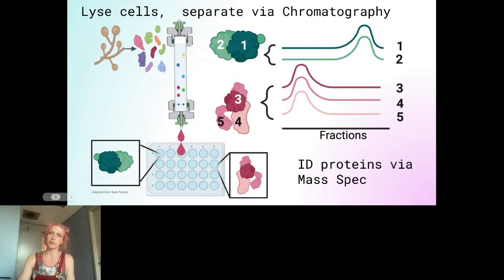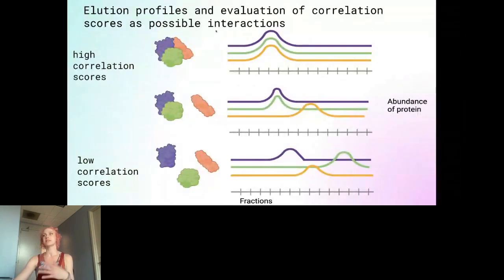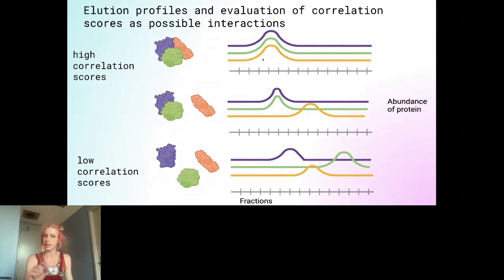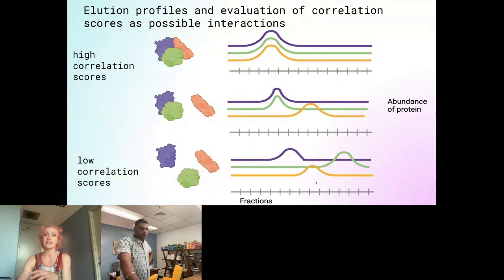When we capture proteins, we can see that the green protein and its subunits elute together, and the red protein complex also has all its proteins eluting together because they were found in the same wells. We can use these elution profiles to evaluate correlation scores and predict possible interactions. If proteins elute together, they have a high correlation score and are more likely to be interacting. If their elution profiles are very different, they probably don't interact.